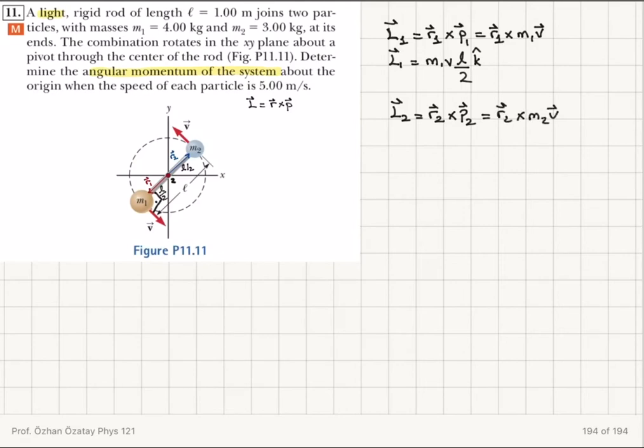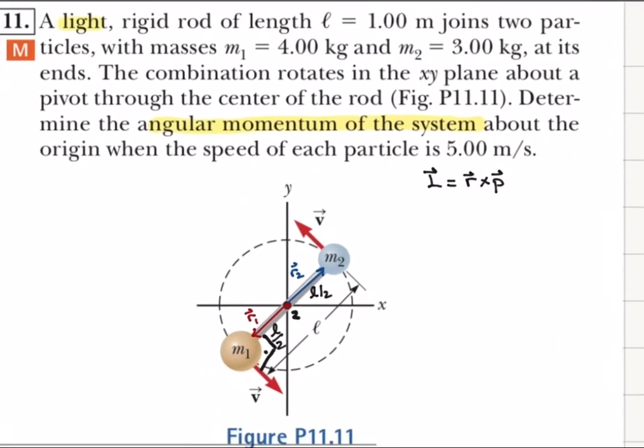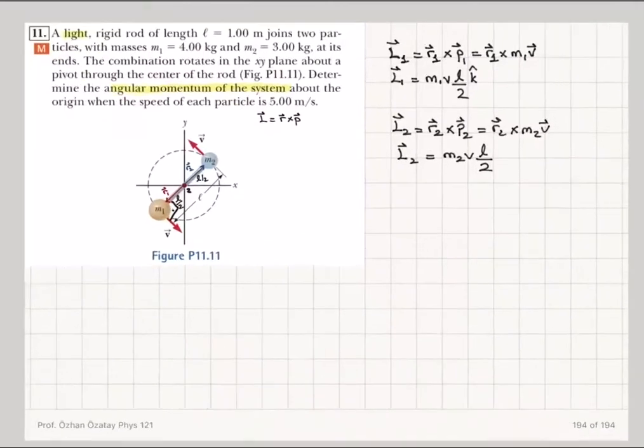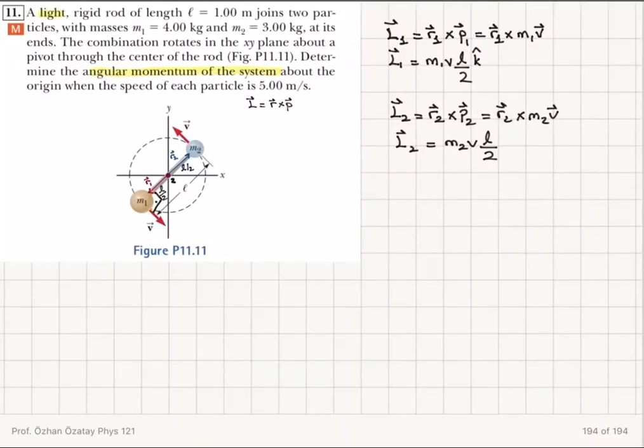Similarly, for L2, I'm going to have r2 cross with p2, or r2 cross with m2·v. This is going to be L2 equals m2·v·l over 2. The direction, r2 cross with v, is also going to be in the k hat direction, coming out of the board or page.